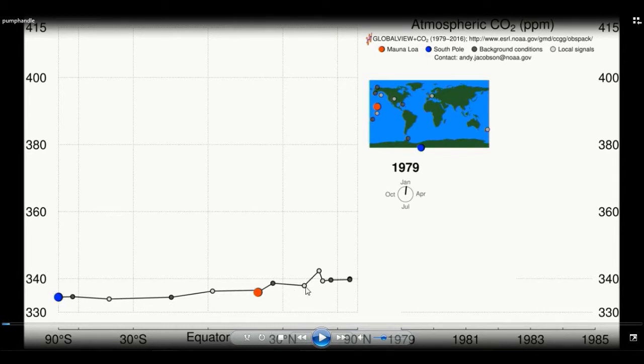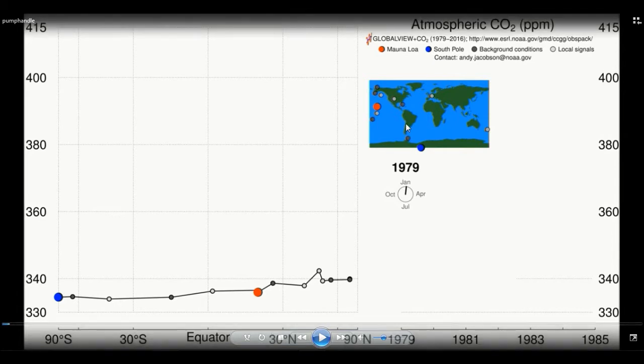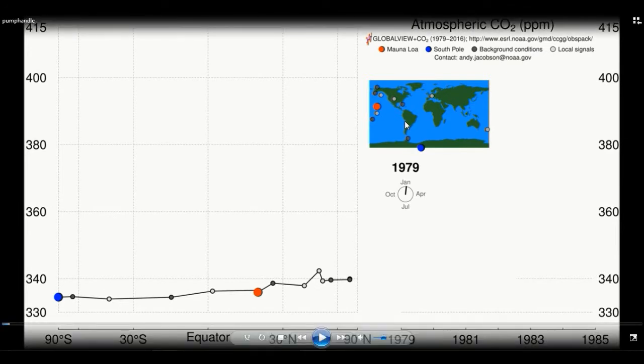Each of these dots on the line here correspond to the dots in the map here. The number of dots will increase as time goes on as more measurement sites are created. When the dots disappear is when the measurement sites are closed down.